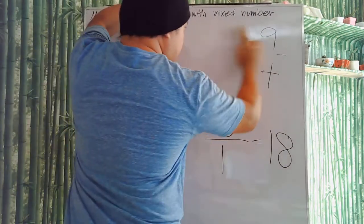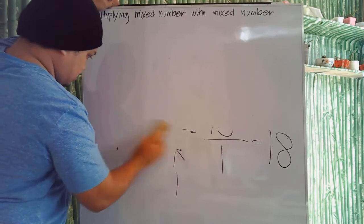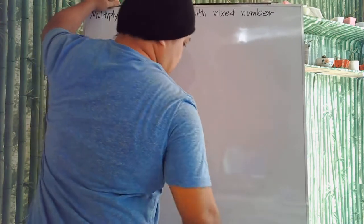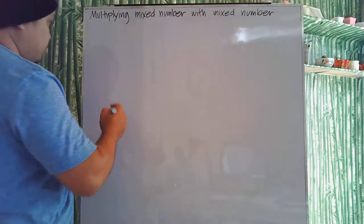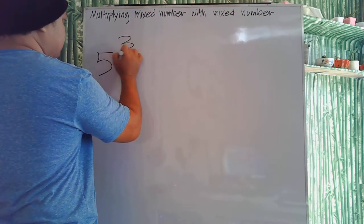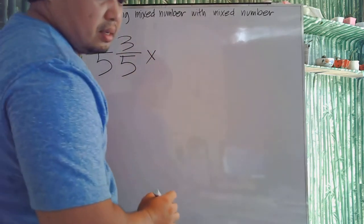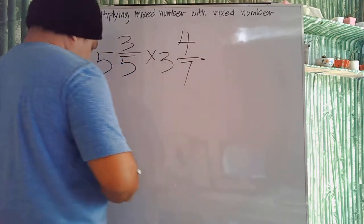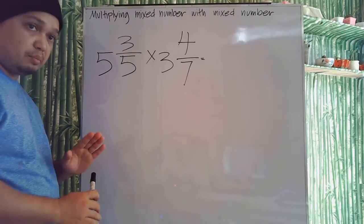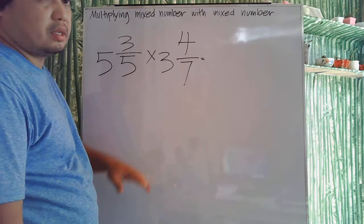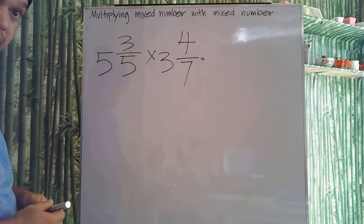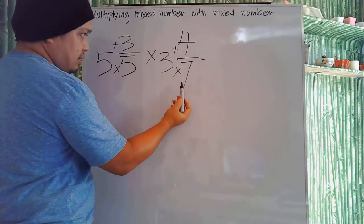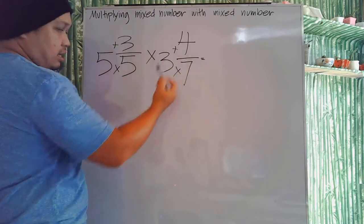Now let's multiply a mixed number with another mixed number. Let's have 5 and 3 fifths multiplied by 3 and 4 sevenths. How do we do this? Simply by changing each mixed number into an improper fraction — by multiplying and adding. You multiply the denominator by the whole number and then add the numerator.